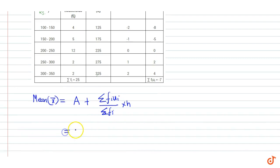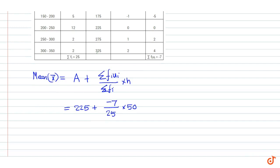This is equal to 225 plus minus 7 divided by 25 into 50. This is equal to 225 minus 14 which is equal to 211.